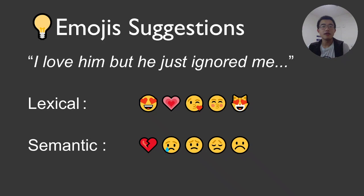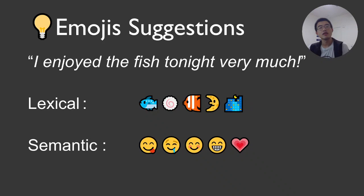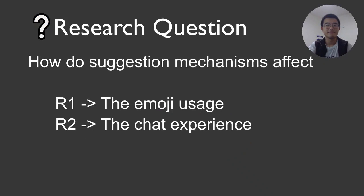Let's see some examples to better understand their differences. Suppose the input is 'I love him, but he just ignored me.' For lexical output, because the keyword is 'love,' it shows emojis like loving faces, heart eyes, and hearts. But for semantic output, the emojis are heartbreak and sad faces, because the overall emotion is sad. Another example: 'I enjoy the fish tonight very much.' For lexical output, there is a fish emoji and a moon emoji for 'tonight.' But for semantic output, they are hungry faces and smiling faces, representing the emotion or semantic meaning of the phrase.